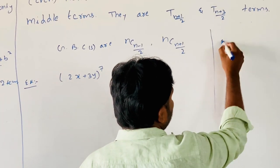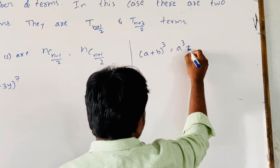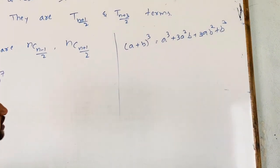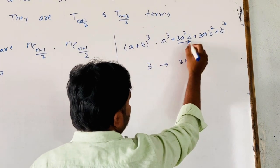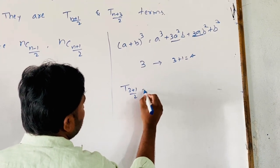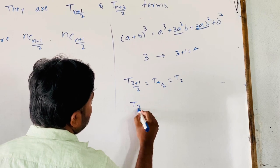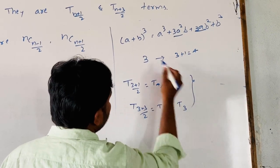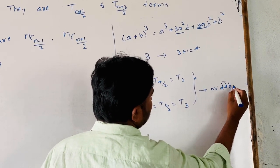For example, consider (a + b)³. The expansion of (a + b)³ is a³ + 3a²b + 3ab² + b³, which has 4 terms. The index is 3, so there are two middle terms: T(3+1)/2 = T2 and T(3+3)/2 = T3. So T2 and T3 are the middle terms in the expansion of (a + b)³.